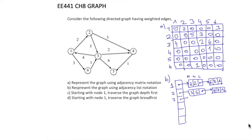For node 3, we have 3 outgoing connections, so we will have 3 nodes in the list. There is a connection from 3 to 1 with weight 4, a connection from 3 to 4 with weight 2, and a connection from 3 to node 5 with weight 6, followed by nil. For node 4, we have a single connection to node 5 with weight 1.